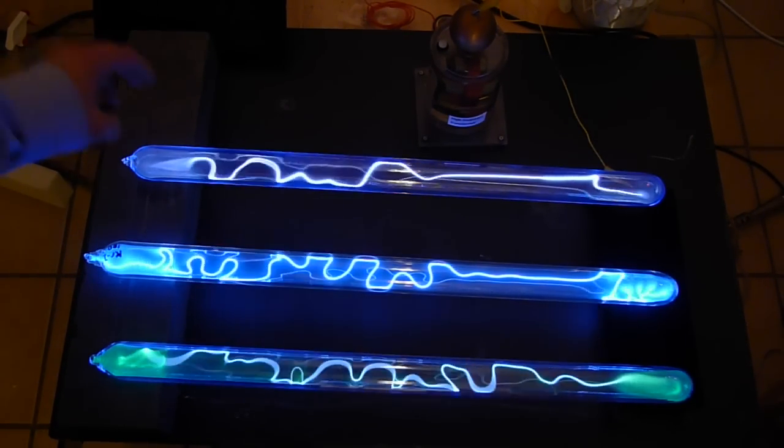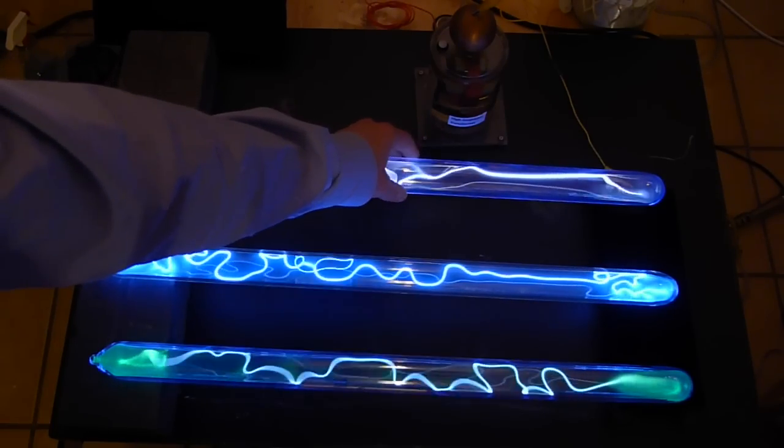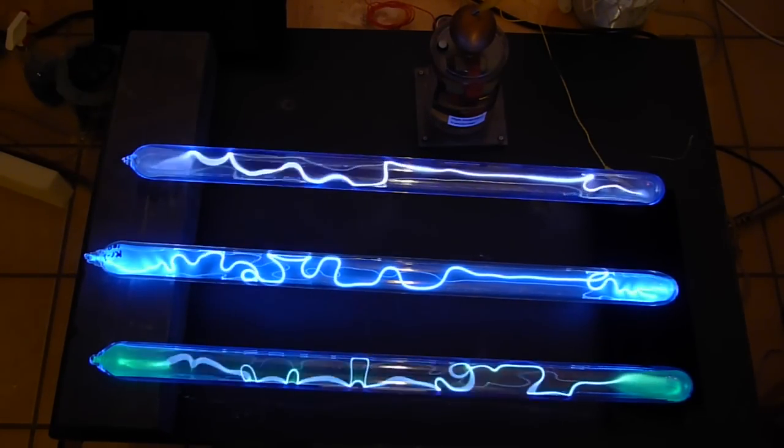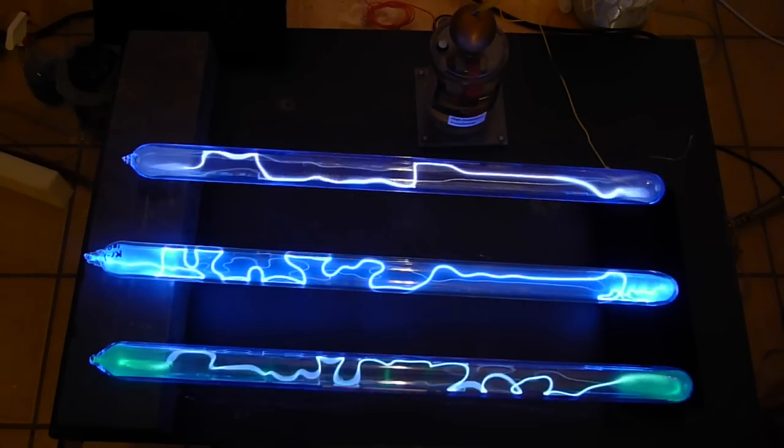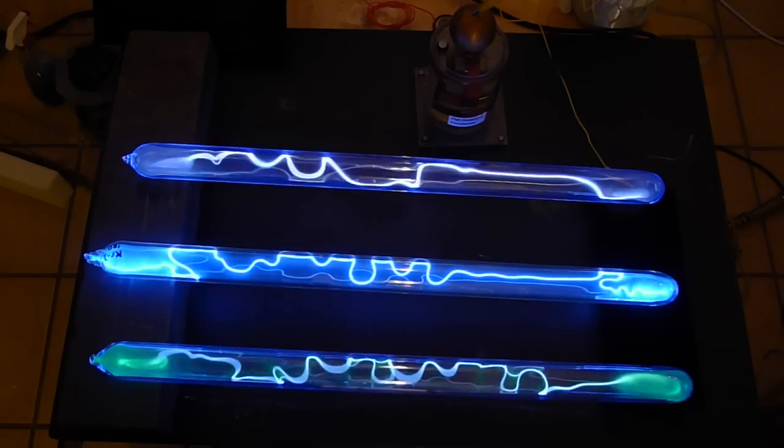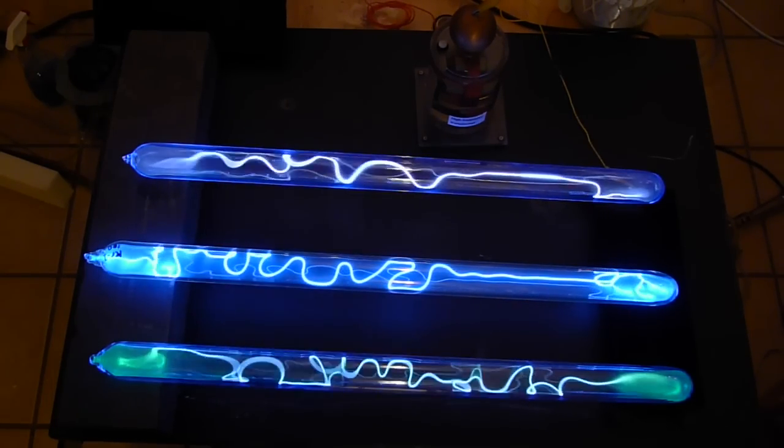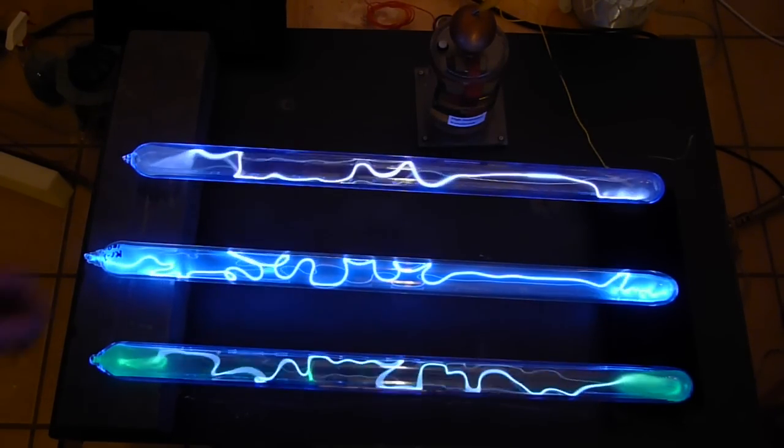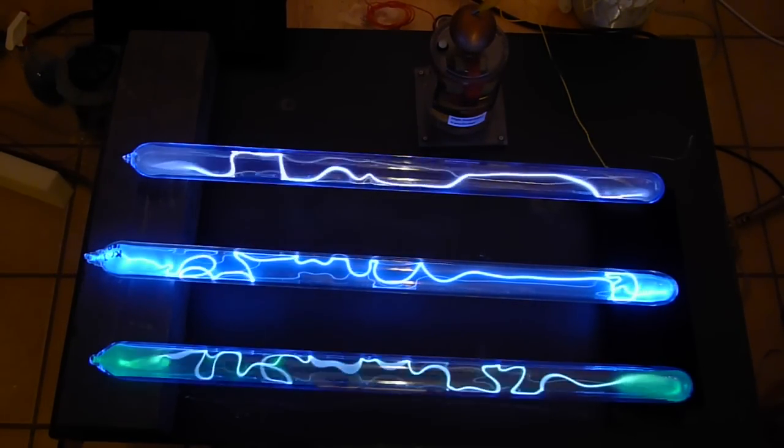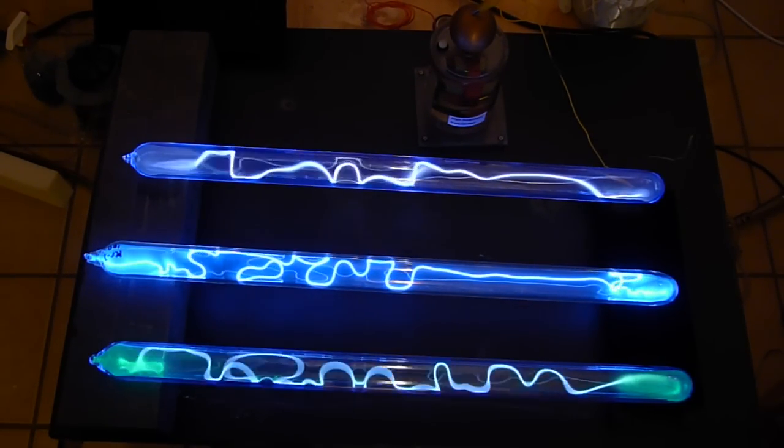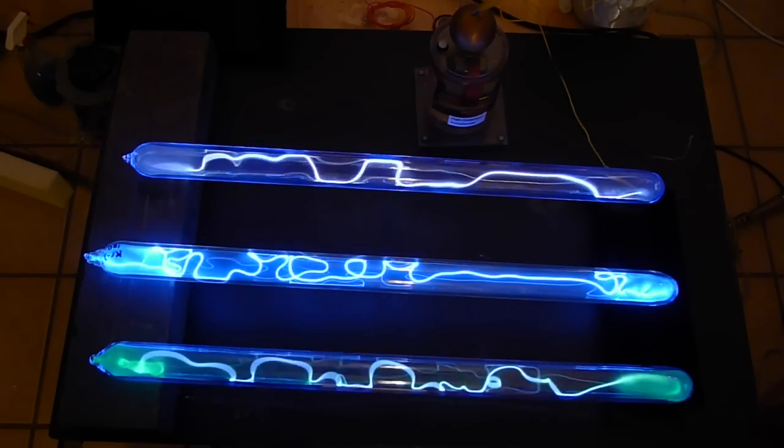The tube at the top, this one, contains pure krypton gas at 200 torr, and you'll notice that it forms a nice sort of white, maybe tinged with a little pink, filamentary discharge that has some diffuse spots in places where it kind of spreads out. So that's krypton at 200 torr.